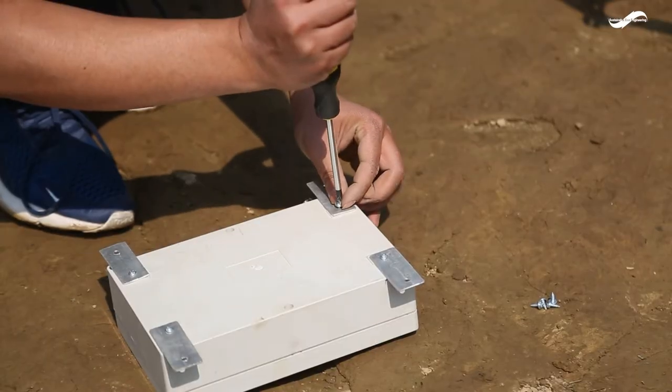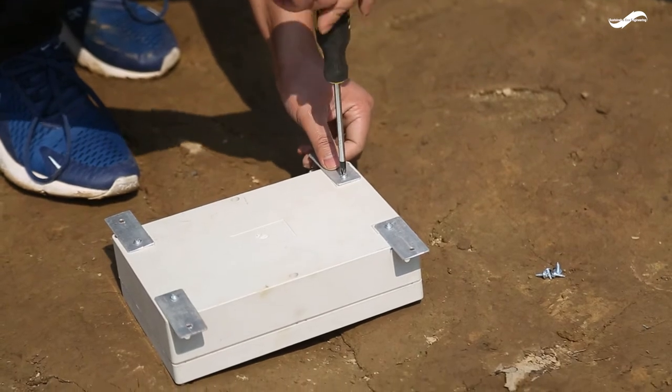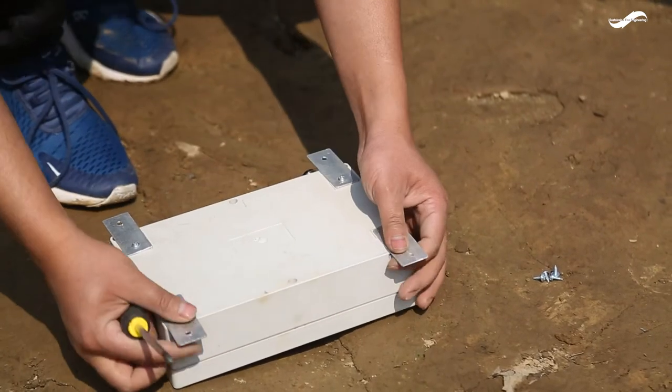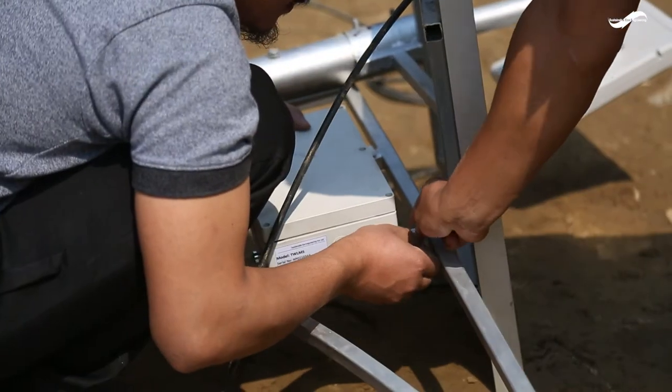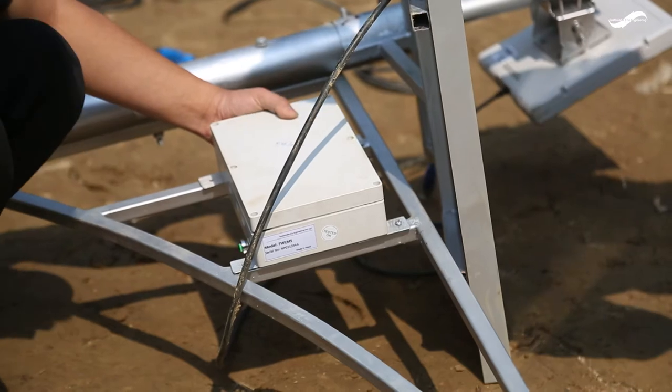Attach four clamps on the back of the data acquisition box. Attach the data acquisition unit to the sensor arm.